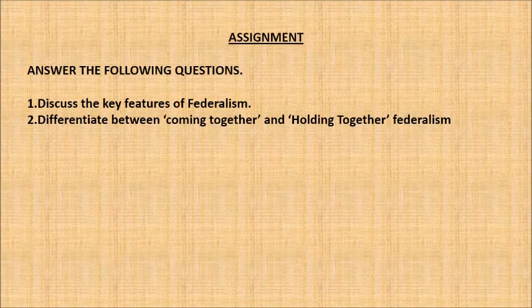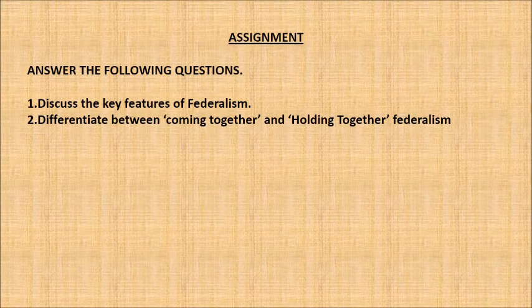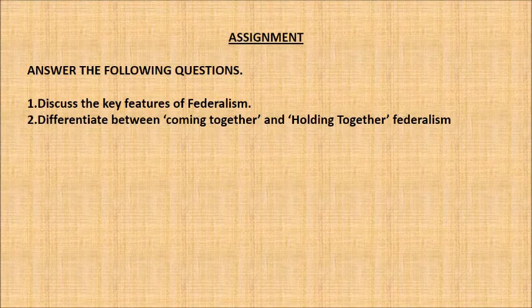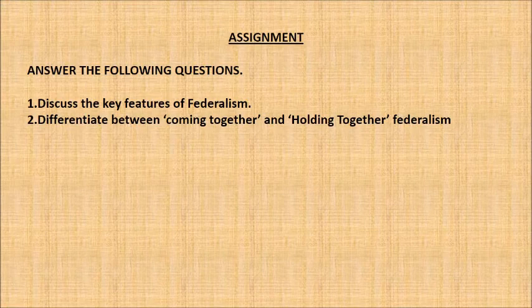There is also an assignment which you need to write in your notebook. First: Discuss the key features of federalism. Second: Differentiate between coming together and holding together federalism — this has already been discussed in the slides, so you can write it from there. So altogether in this part of the lesson, you have five questions which need to be written in your notebooks — three I have already given, and two go as homework.